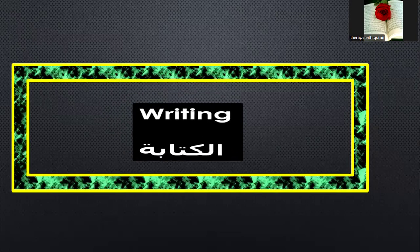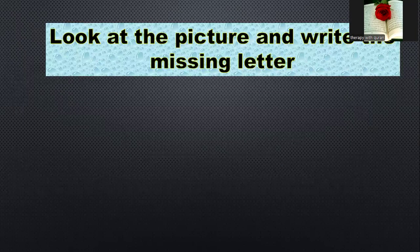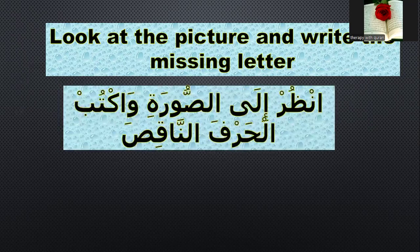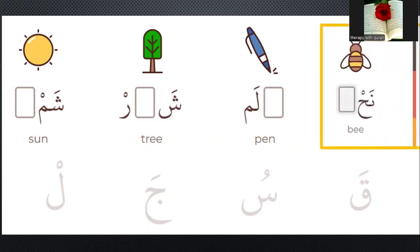Let's go to the writing skills. I will test your writing skills, maharatuka al-kitabiyya. The first question: look at the picture and write the missing letter, anzal ila surah waqtub al-harfa naqis. Please look at the first picture — which letter? It means nahl. Which letter is at the end of the word? Yes, it's letter la. The word is nahl.